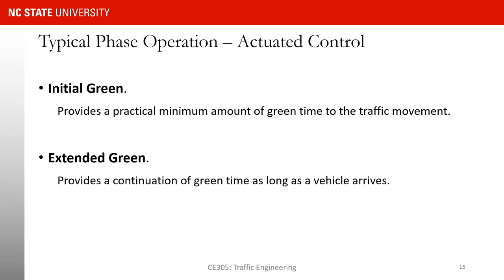On this slide we talk about typical phase operations in actuated control. We have an initial green or minimum green, and then based on vehicle detection that green is extended either to the maximum green — when it is maxed out — or, if there is not enough traffic demand detected, we have a gap-out situation where the green extension stops before hitting the maximum green.